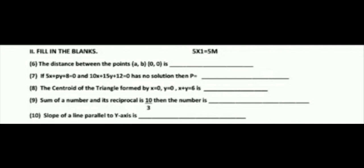The centroid of the triangle formed by x equal to 0, y equal to 0, x plus y equal to 0 is. The sum of a number and its reciprocal is 10 by 3, then find the number. Slope of line parallel to y axis is.